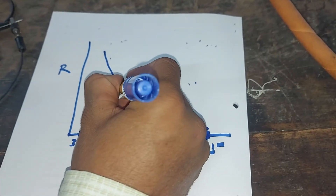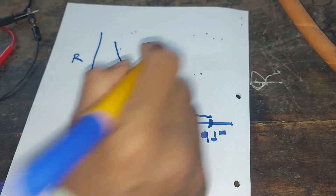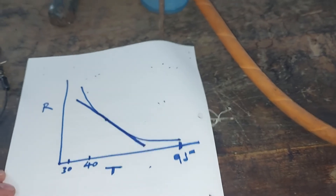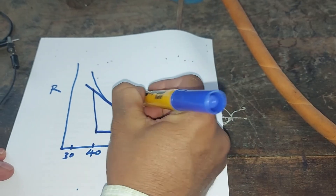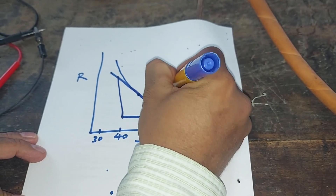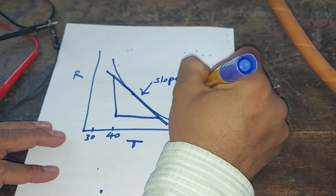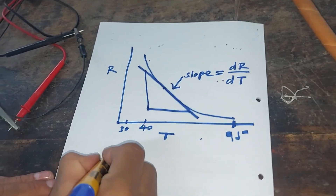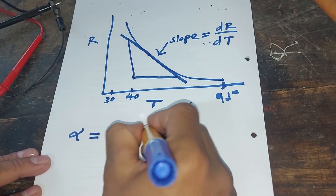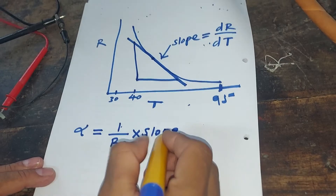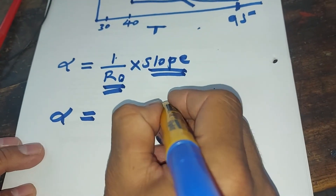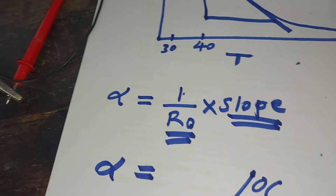We have to note down a middle point on the graph, draw a tangent to the curve at that point, and find the slope. This slope gives us the dR/dT value. The temperature coefficient of the thermistor is given by: alpha equals 1 divided by R0, multiplied by the slope of this graph. R0 is 951 ohm. You substitute this value and finally you will get the value per degree centigrade, which is the temperature coefficient of the given thermistor.